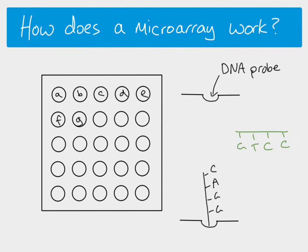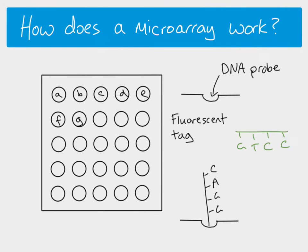If you have a piece of DNA from your sample cell that is complementary, it will be able to bind to the DNA probe. You take your DNA or messenger RNA — depending on how you're using your microarray — from the cell you're interested in, and you add a fluorescent tag onto the end of the DNA or RNA you've extracted. It could be a red tag, a green tag — you can use different colours.